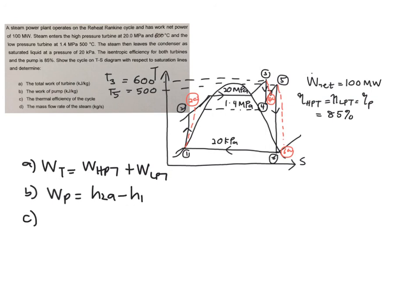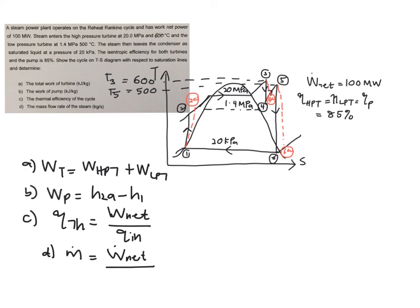Then find the thermal cycle efficiency using W_net over Q_in. Finally, find the mass flow rate M_dot by making use of the given W_net of 100 megawatts together with the W_net expression you obtained.